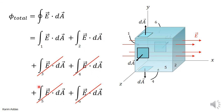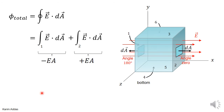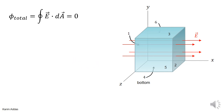So these four terms are zero. The electric flux through the left surface is minus EA, and the electric flux through the right surface is plus EA. When you add all six contributions together, you get zero. The total electric flux through this cube is exactly zero.